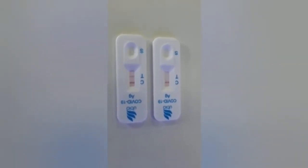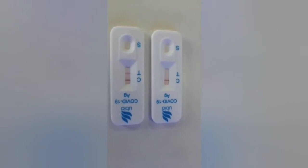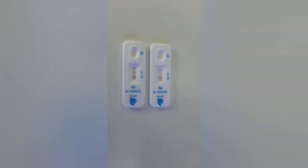If the control line C is not observed, it will be invalid regardless of whether there is a test line, and the test shall be conducted again.